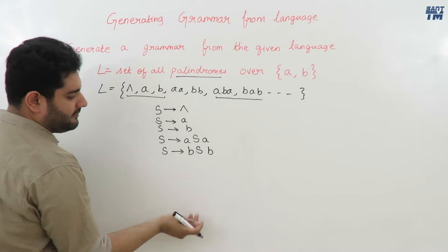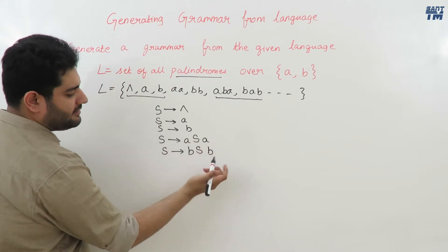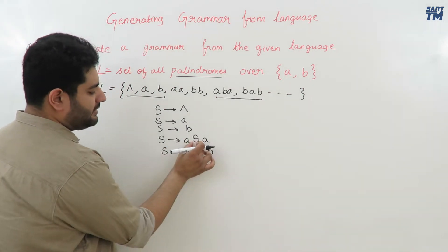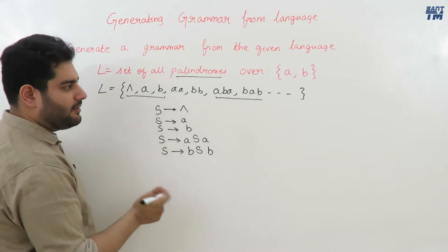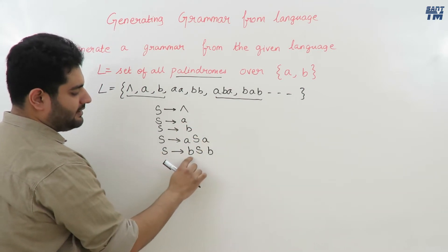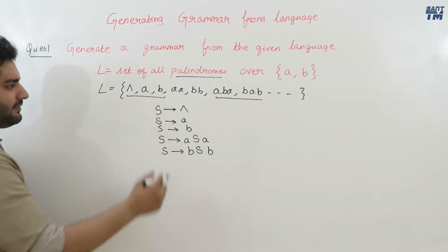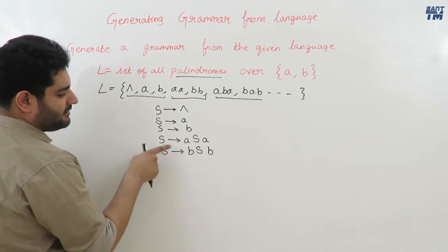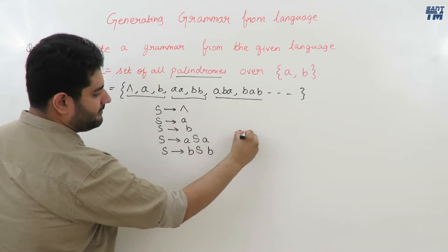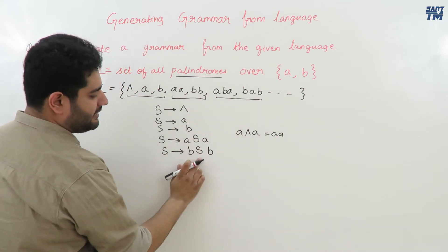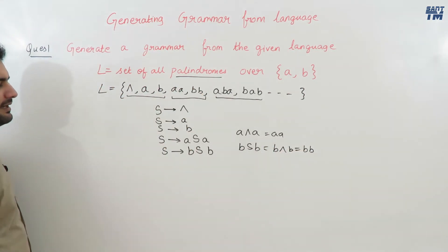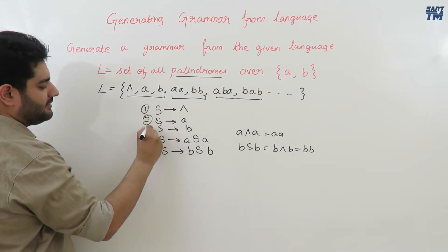The production S → aSa means you can put anything between two a's, and S → bSb means anything between two b's, such that reading it from reverse or from start gives the same result. For example, substituting S → b in aSa gives aba. In bSb, substituting S → a gives bab. For strings aa and bb: in S → aSa, substituting S → null gives a·null·a = aa; and in S → bSb, substituting null gives bb. All palindromes are satisfied by these five production rules.